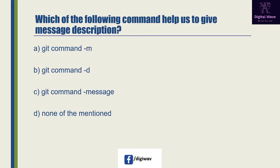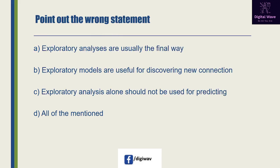Next question: which of the following commands helps us to give a message description? Option A is 'git commit -m', option B is 'git commit -d', option C is 'git commit --message', and the last option is none of the mentioned. The right answer will be A: git commit -m, because this is the only update in your local repository.